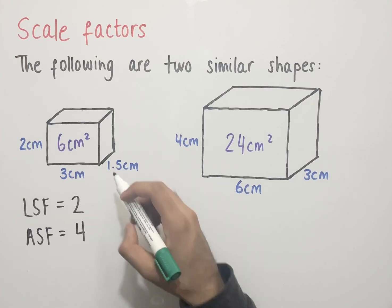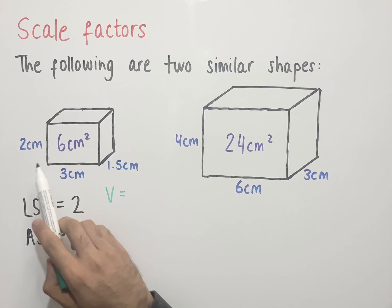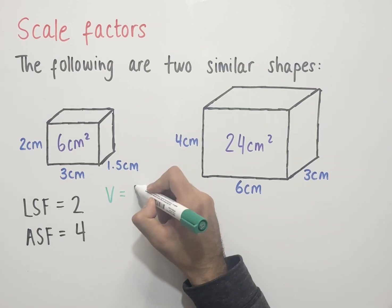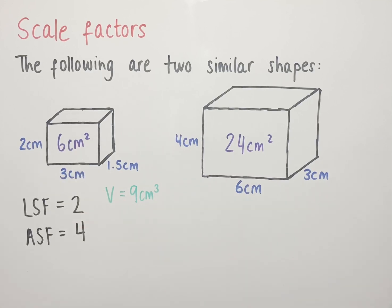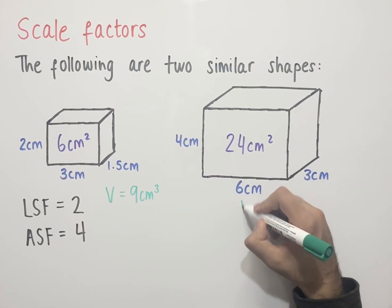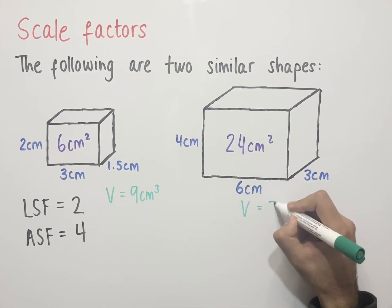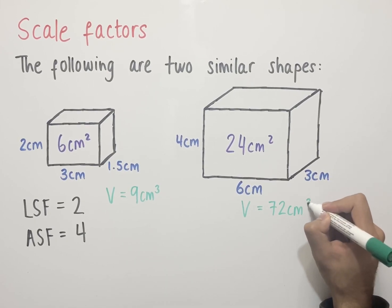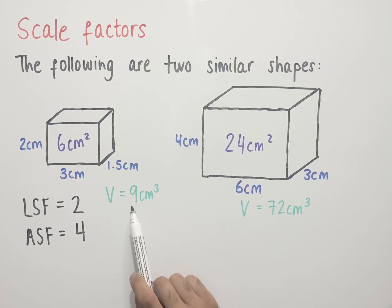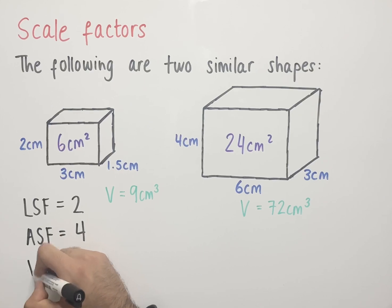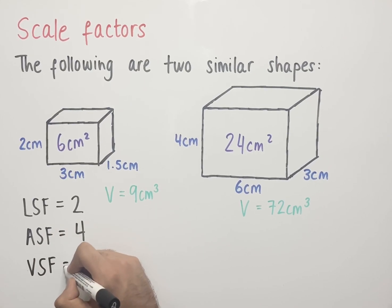To calculate the volume of the smaller cuboid: V = 2 times 3 times 1.5. 2 times 3 is 6, and 6 times 1.5 is 9, so the volume is 9 centimeters cubed. The volume of the larger cuboid equals 4 times 6 times 3. 4 times 6 is 24, and 24 times 3 is 72 centimeters cubed. The volume scale factor is the number we multiply 9 by to get 72 — or divide 72 by to get 9 — which is 8. So the volume scale factor, or VSF, equals 8.